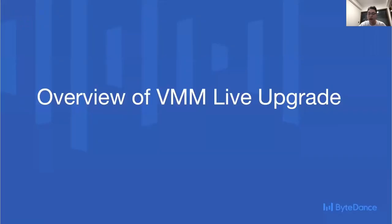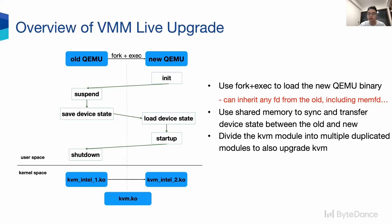Before that, I will introduce our basic VMM Live Upgrade framework. First, we use fork and then exec to load the new QEMU binary so that we can inherit any file descriptor from the old QEMU, including memory FDs. By this, we don't need the iterative memory copy.